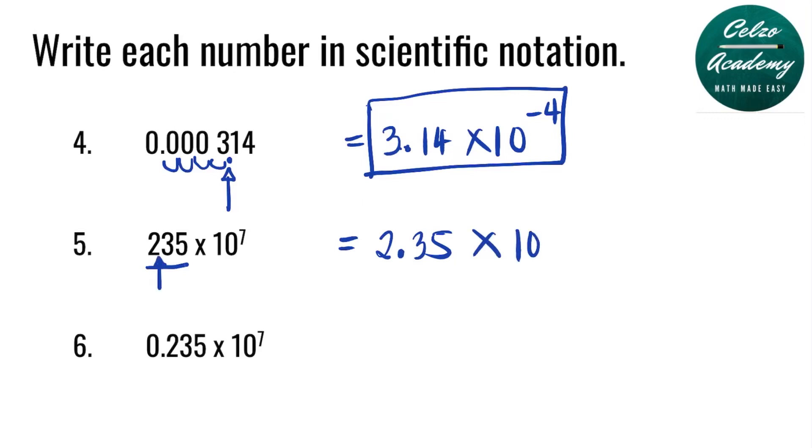The exponent 7 will change. We moved 1, 2 places. So the new power now is added by 2. So the answer is 2.35 times 10 to the power of 9.